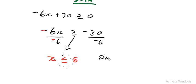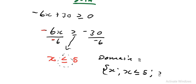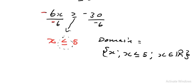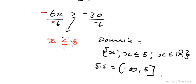So the domain is {x : x ≤ 5, x ∈ ℝ}. In set notation, this is written as (−∞, 5].